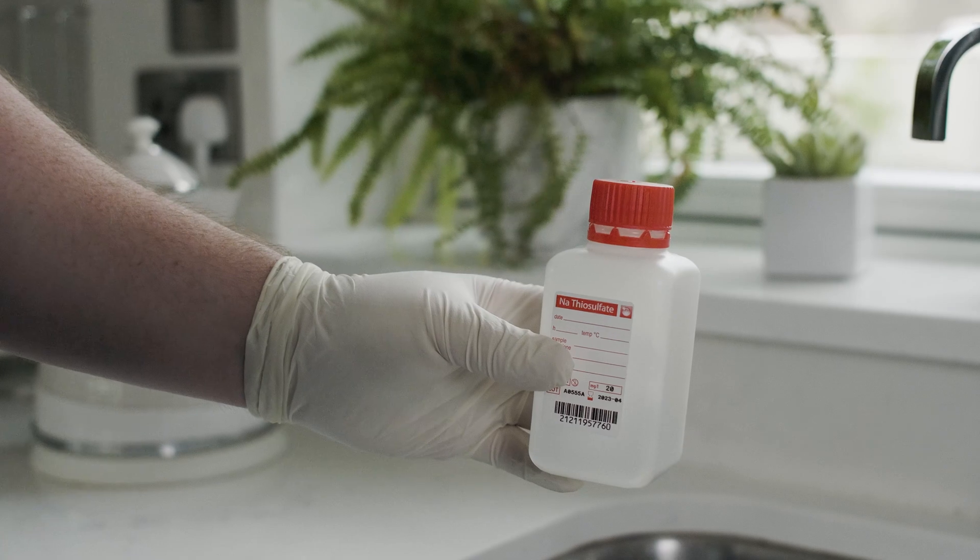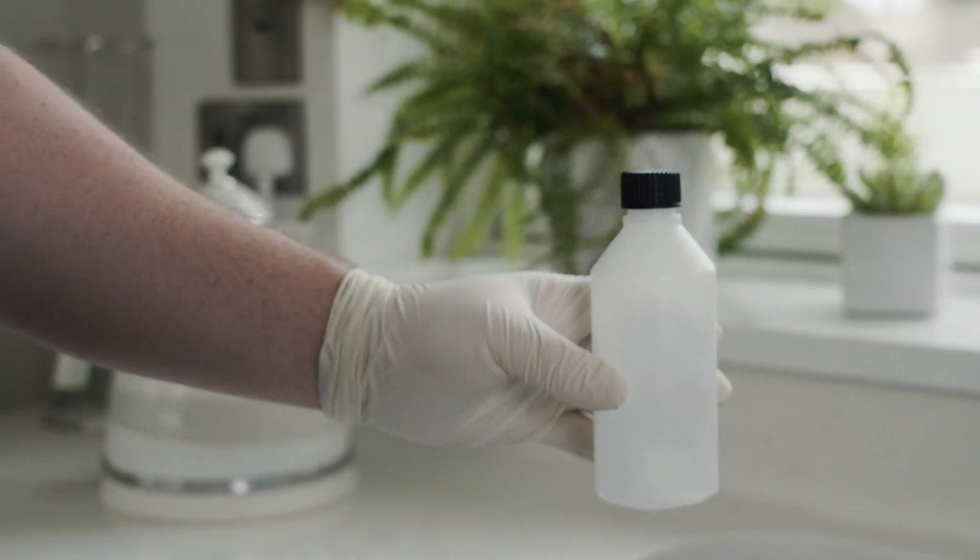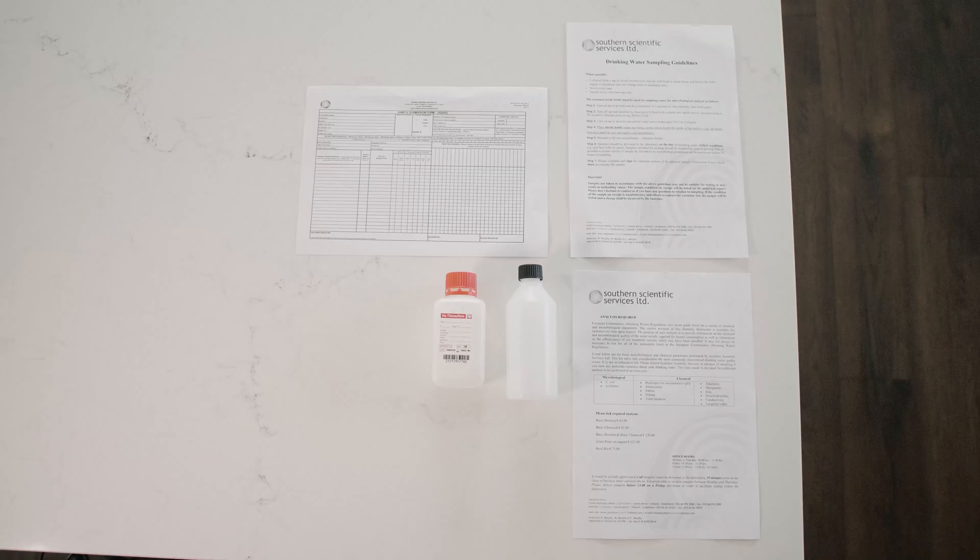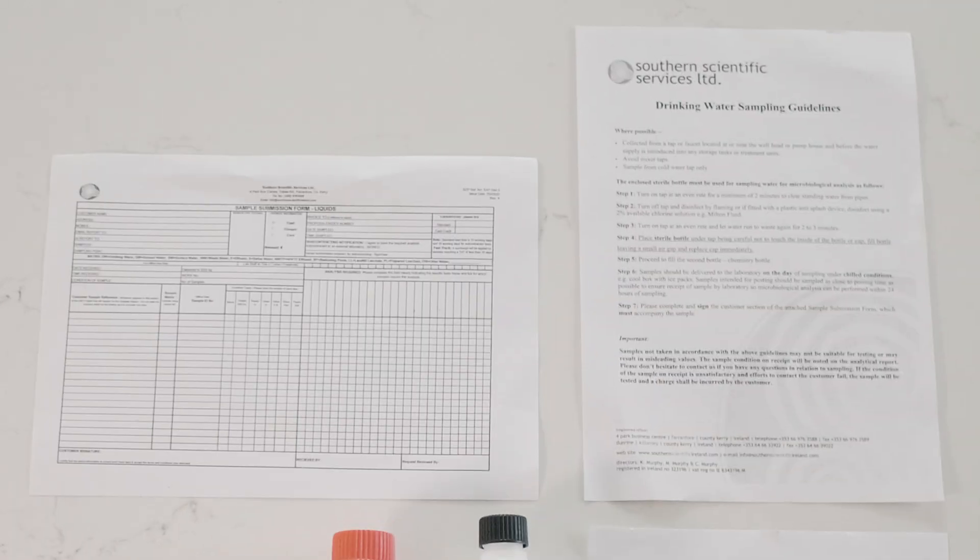Notice that it comes with two different bottles. The red cap bottle is for the microbiology test while the black cap bottle is for the chemistry test. To make the process as smooth and efficient as possible it also includes sampling guidelines and a reception form.